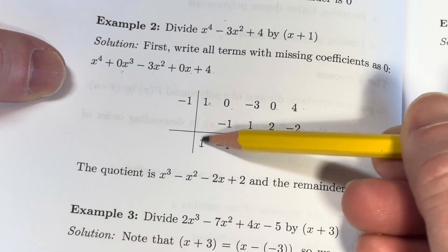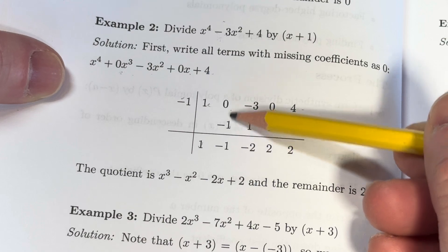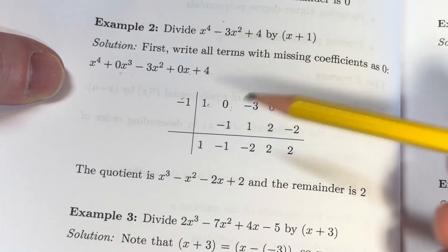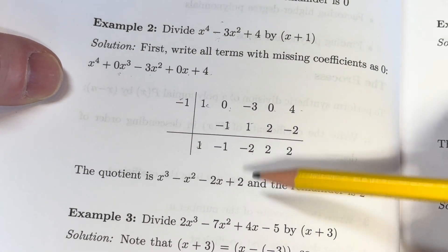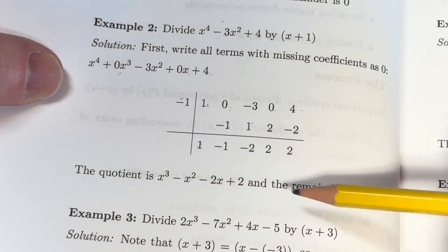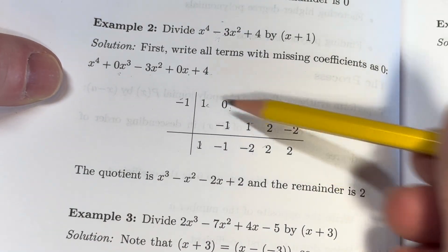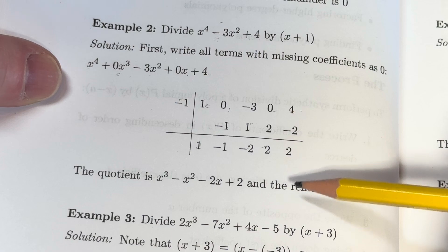First step is bring down the 1. 1 times negative 1 is negative 1. We add and we get negative 1. Negative 1 times negative 1 is 1. We add and we get negative 2. Negative 2 times negative 1 is 2. We add and get 2. 2 times negative 1 is negative 2. We add and we get 2.